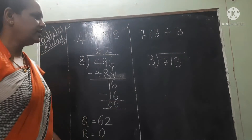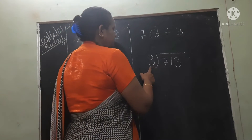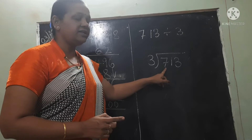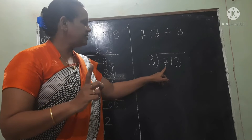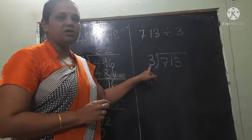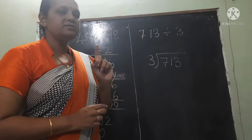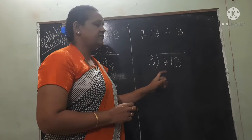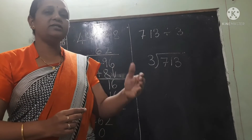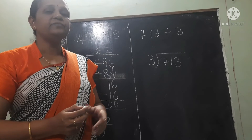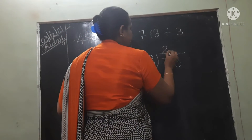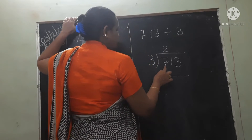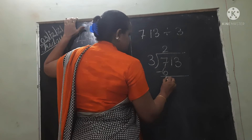Now we will do the next one. Here the divisor is 3 and the single digit dividend we see is 7. The single number 7 is big and divisor 3 is small, so here we have to take a single number. In the 3 times table, will 7 come? No. The nearest smaller number — 3 twos are 6. So here we do 7 minus 6 equals 1.